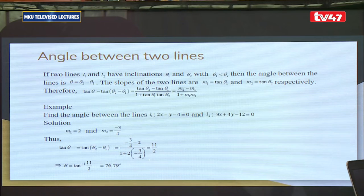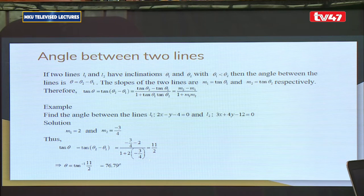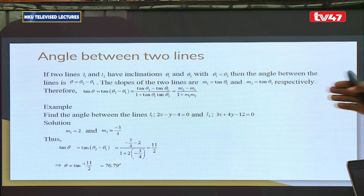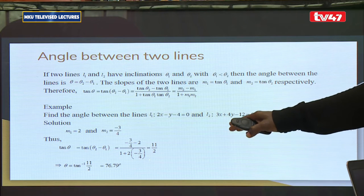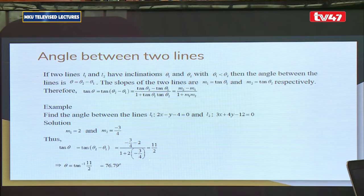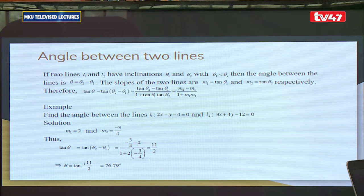Example: Find the angle between 2x minus y minus 4 = 0 and 3x plus 4y minus 12 = 0. We find m1 and m2 from each line, which are 2 and -3/4 respectively. Applying the formula gives theta = 76.79 degrees.